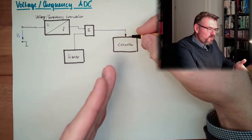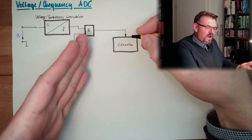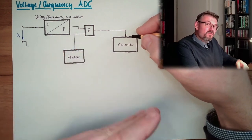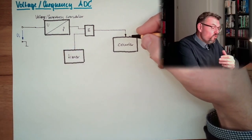If we have high voltage, we will count further because it's a higher frequency. If it's low voltage, in the same time we will not count that far because it's a low frequency.